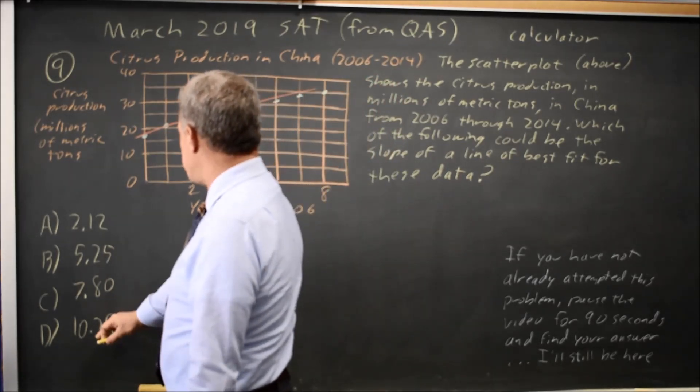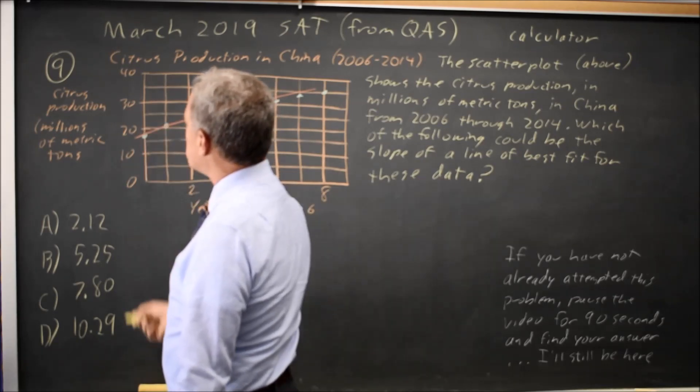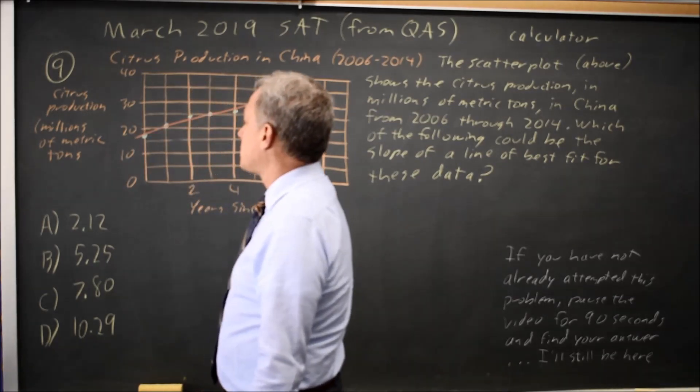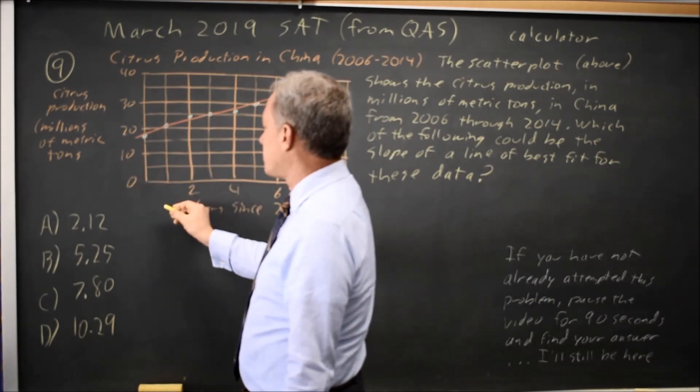If my slope were 10, then each time the year goes up by 1, citrus production should go up by 10 on this scale. Always watch for scales because they frequently change scales, and they do, in fact, change scales for this.